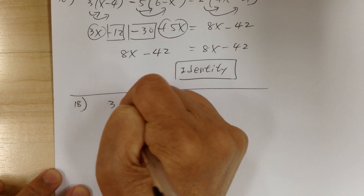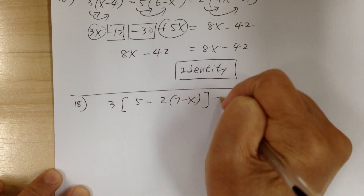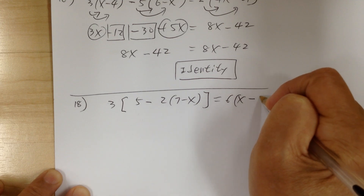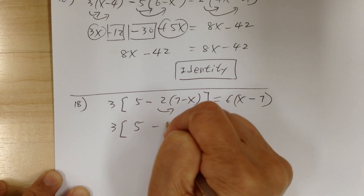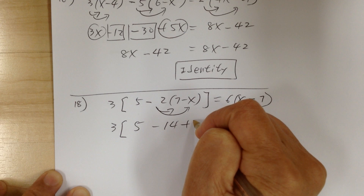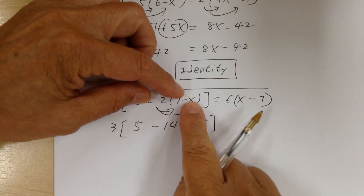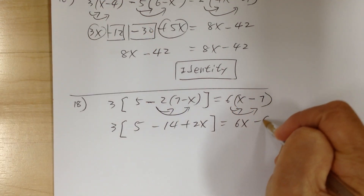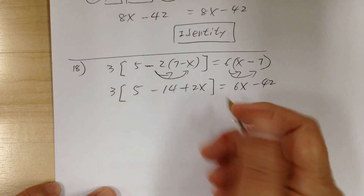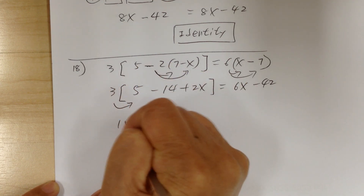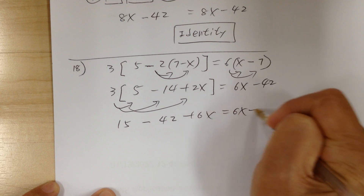Number 18. You have 3 times (5 minus 2 times (7 minus x)). First, get rid of the parentheses by distributing. You get minus 14, then distributing gives plus 2x, so that's minus 17 plus 2x for the inner part. Then you get 6x minus 42. Distribute the 3 out: so you get 15 minus 42 plus 6x equal to 6x minus 42.